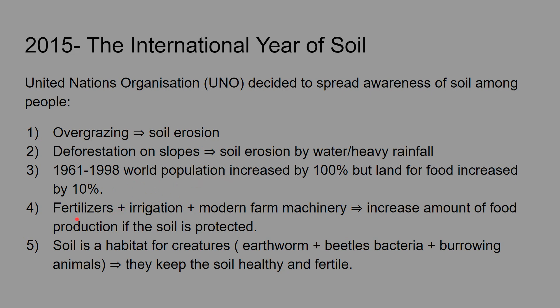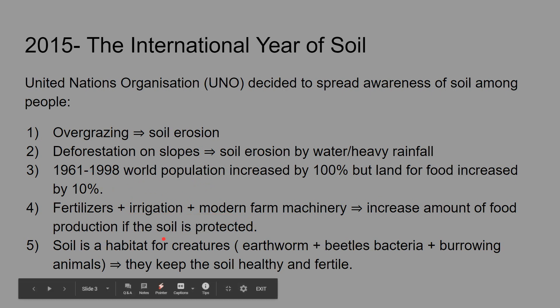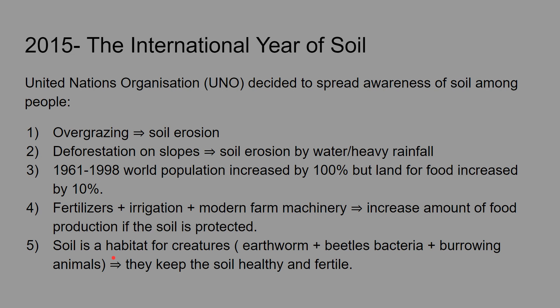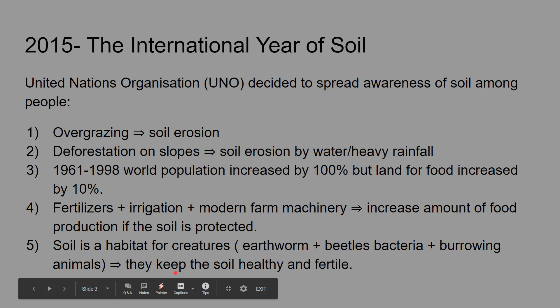Fertilizers, irrigation, and modern farm machinery are very important, but only if the soil is protected. Soil is also a habitat for creatures like earthworms, beetles, bacteria, and rabbits, because they keep the soil healthy and fertile.